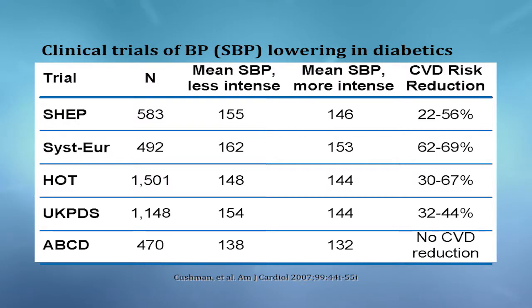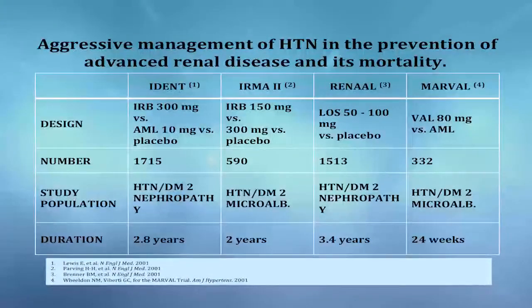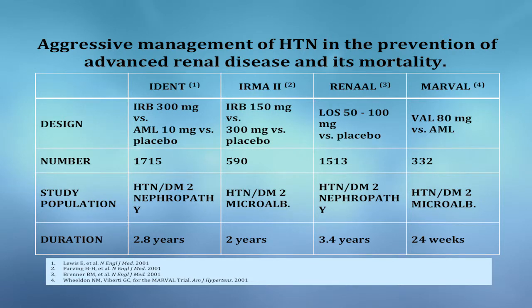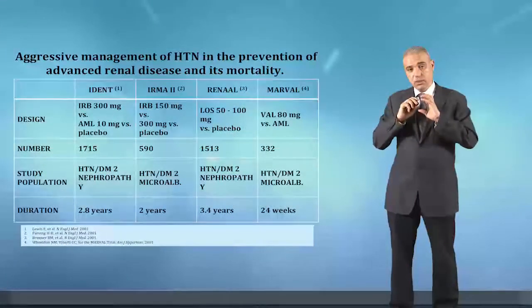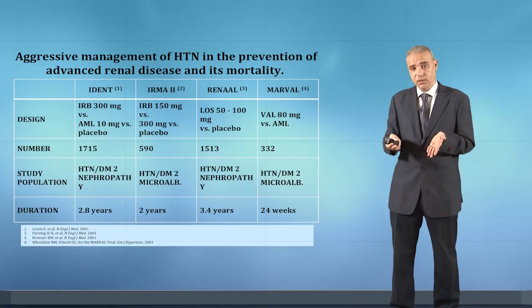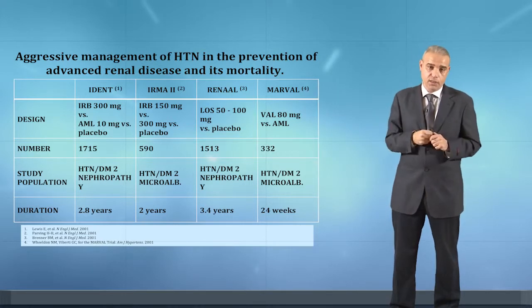Evidence from clinical studies including SHEP, SYSTEUR, HOT, and UKPDS shows that managing hypertension reduces cardiovascular risk. Cardiovascular mortality was reduced between 25% to 70% in most studies once blood pressure was brought to target. Multiple studies — including IDNT, IRMA2, RENAL, and MARVAL — demonstrate that controlling blood pressure reduces new development of microalbuminuria, progression from micro to macroalbuminuria, and doubling of serum creatinine.